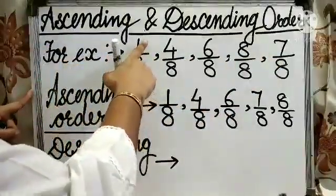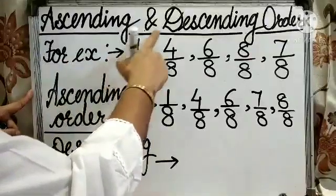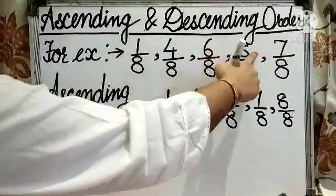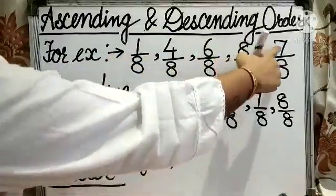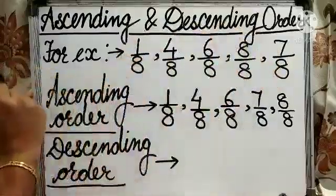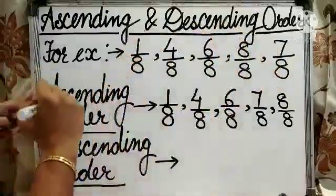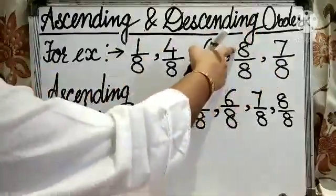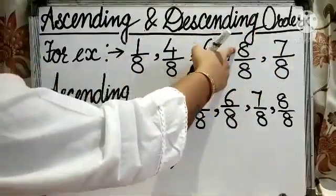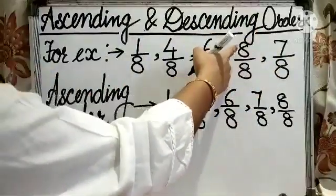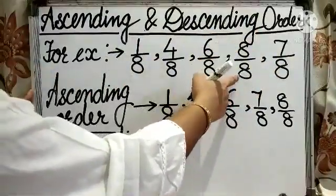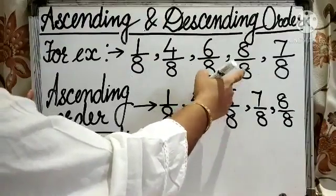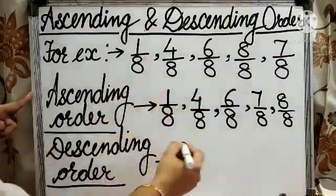We have number 1, number 4, number 6, number 8 and number 7 as numerators. And from the given numerators, 8 is the greatest numerator. So 8 by 8, this fraction will be considered as the greatest fraction.